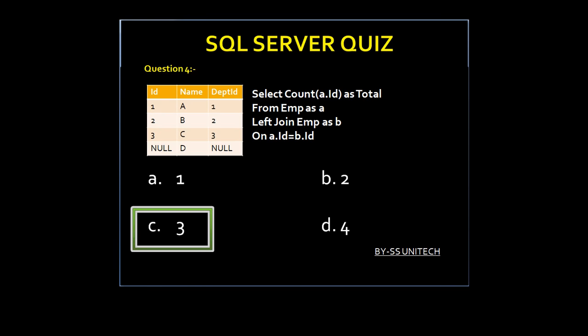Here we are using self-join and again two null values are treated as different values. So option C is true. Let's move to another question.